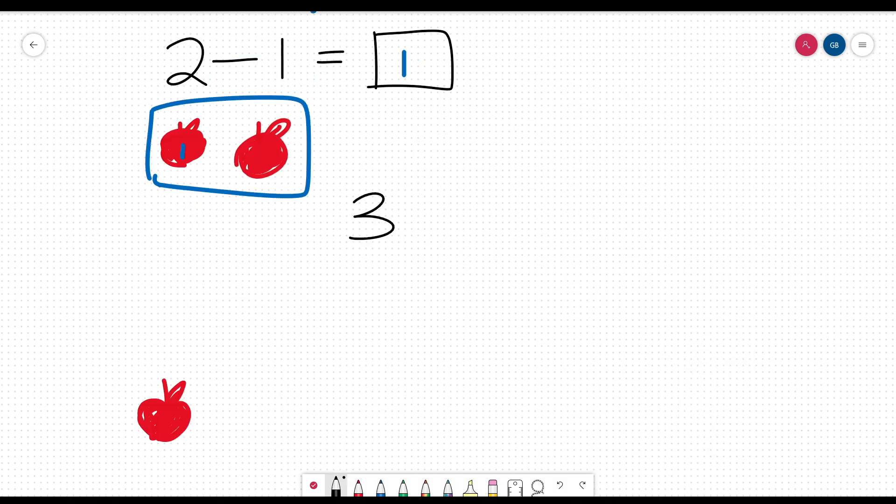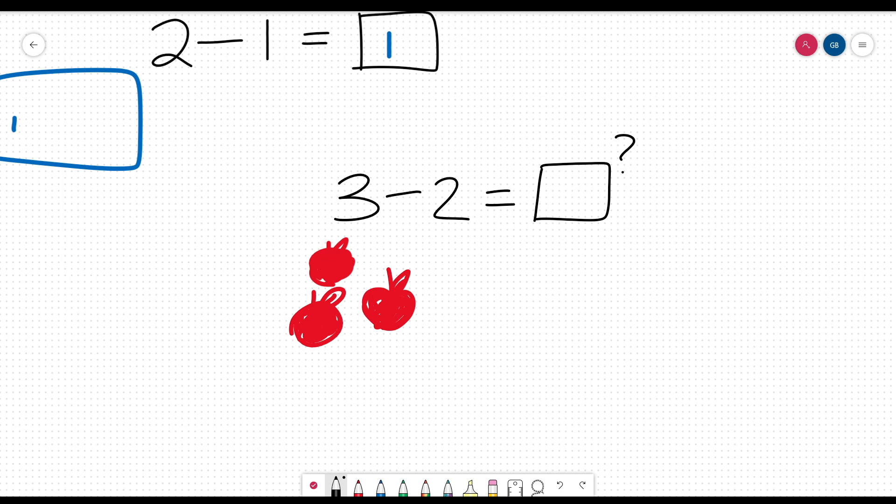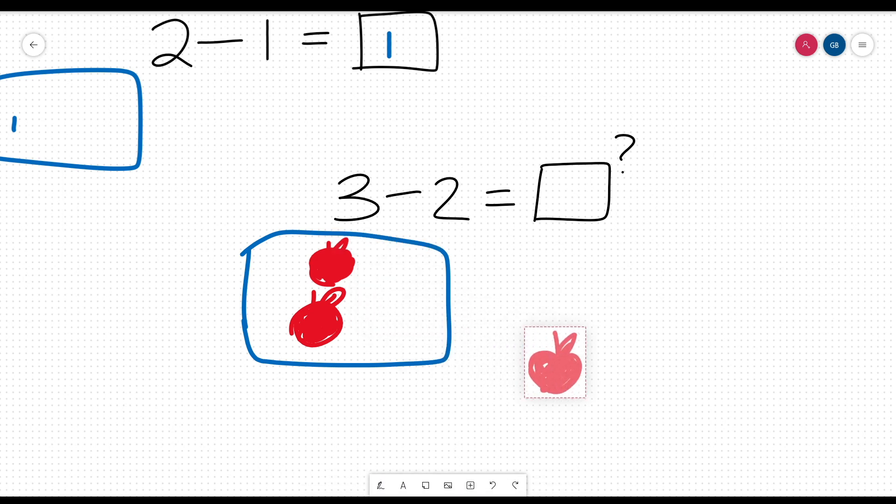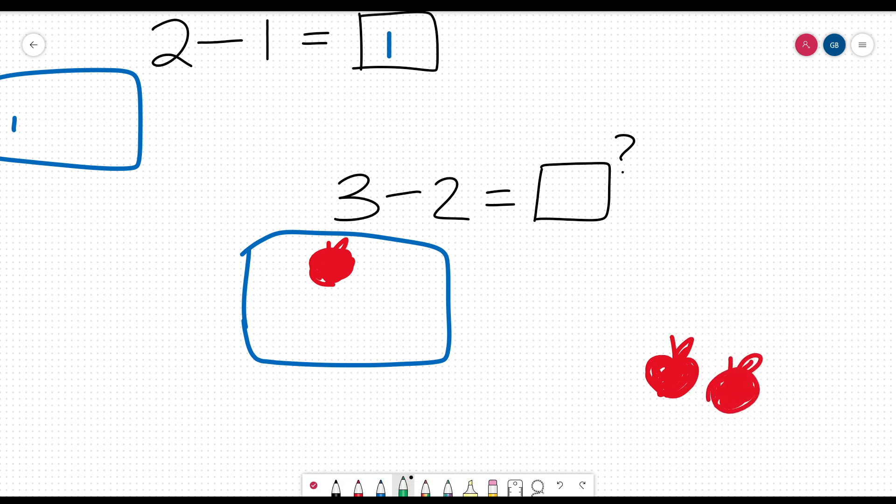Now let's solve 3 minus 2. Let's say you have three apples. Now if we remove two of those apples, how many do you have left? There is one apple left, so the answer to this problem is also 1.